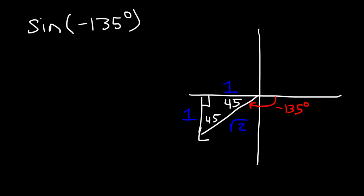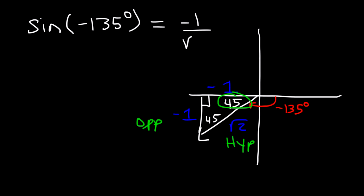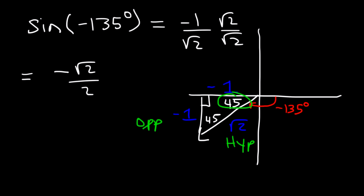In quadrant 3, x and y are both negative. Evaluating sine of negative 135: sine is opposite over hypotenuse, so it's negative 1 over √2. Rationalizing, that equals negative √2 divided by 2, and that's the answer.